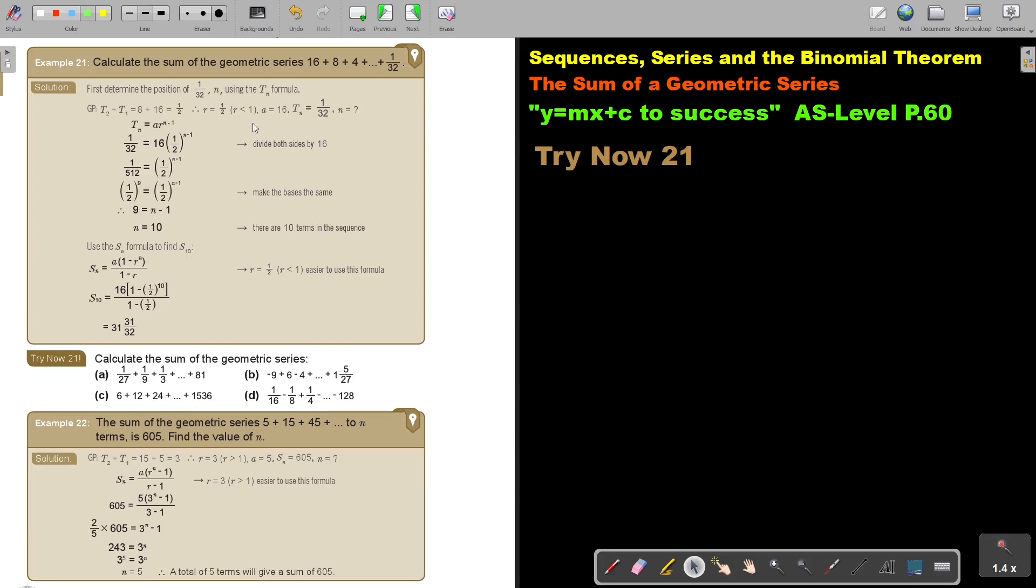So I quickly, I know that A, what is A, 16. I know that to find the value of R, it's going to be half. And they tell you it's a GP, so you can just directly go to the formula. So I substitute, I divide, I use this. I can either use logs to bring that N down.